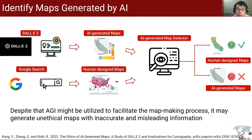To address these issues, we developed an AI-generated map detector system that can identify whether a map is generated by AI or is a human-designed map. Such a detector can be useful in various applications, such as identifying potential cases of AI-generated maps being used to spread misinformation on online social media platforms. Although generative AI may have the potential to facilitate the map-making process, it is essential to consider potential ethical concerns.